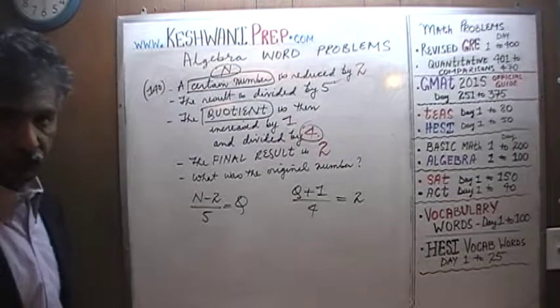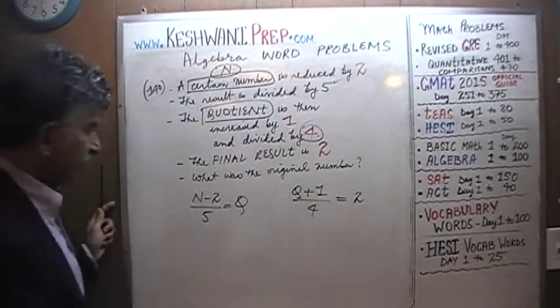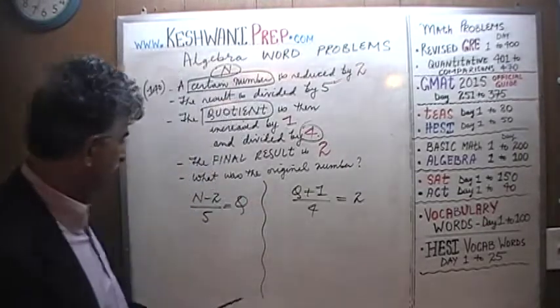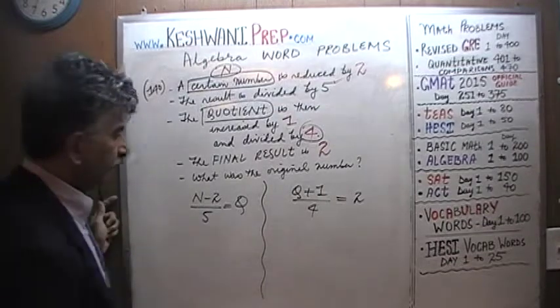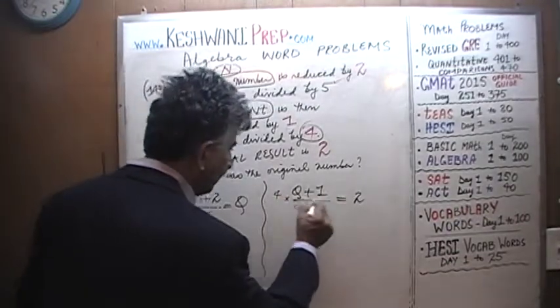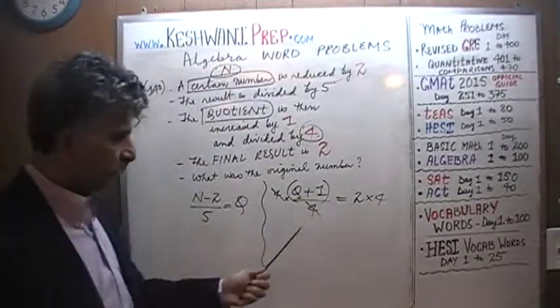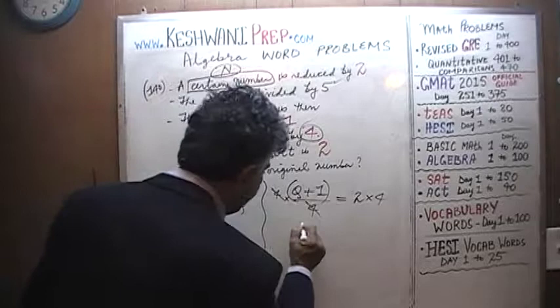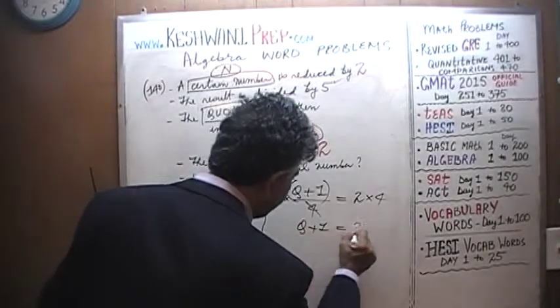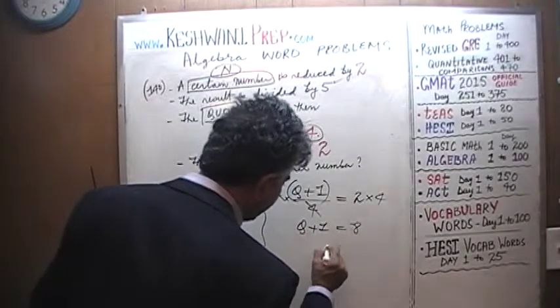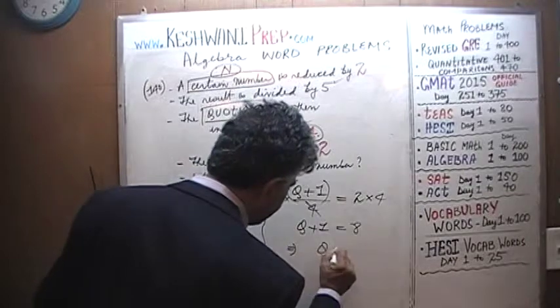So let's solve for Q from here. If we multiply both sides by 4, multiply this side by 4 and that side by 4. If we do that, we can get rid of this 4. In other words, bring the 4 over there, and we find that Q plus 1 equals 8. If Q plus 1 equals 8, that in turn implies that Q must be 7.